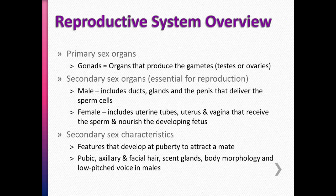Body morphology changes as well — for males, they get more muscular; for females, wider hips develop. Low-pitched voice in males is also another secondary sex characteristic that shows up at puberty to indicate you are now a mature adult and can reproduce.